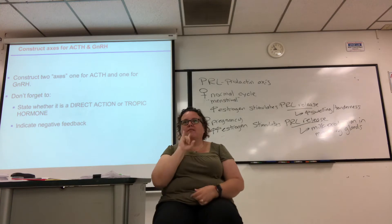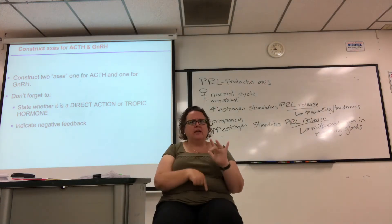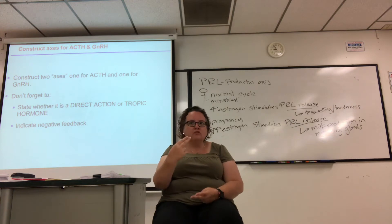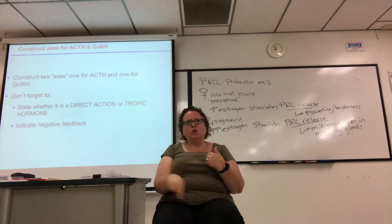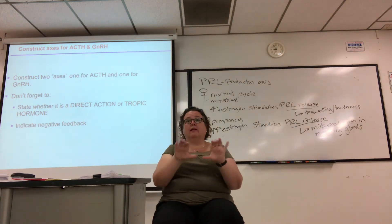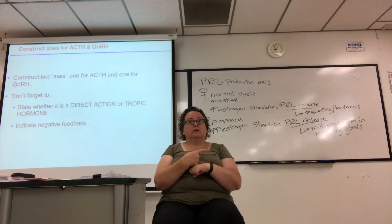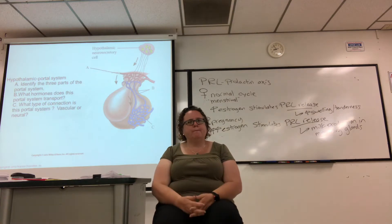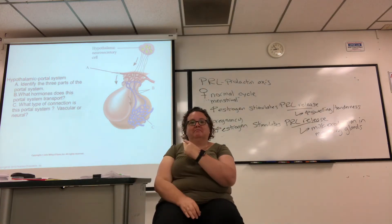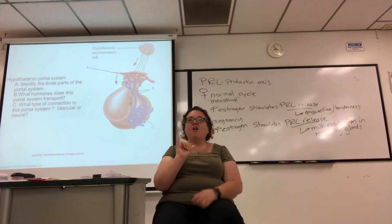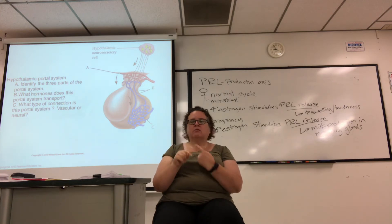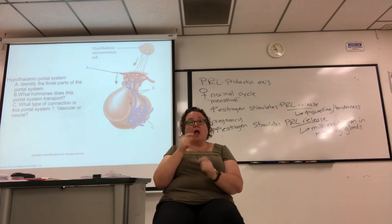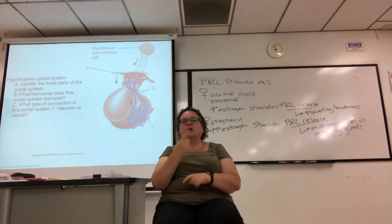I skipped ACTH and GnRH for now. These last slides are review. Look at this picture — it doesn't matter what picture I use; if you understand the pituitary, you can apply it to any picture on a quiz or test. For the hypothalamic portal system, identify the three parts: capillary 1, the portal vein, and capillary 2. Read the question carefully — if asked about the portal system, name those three parts.